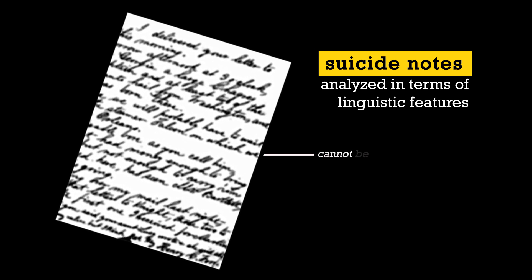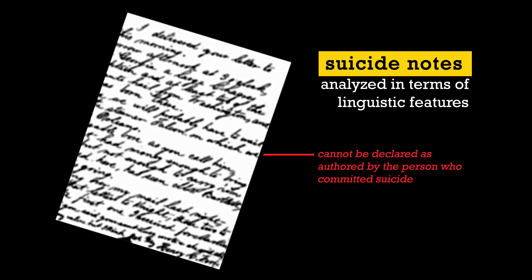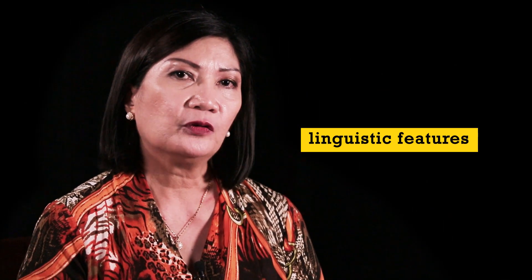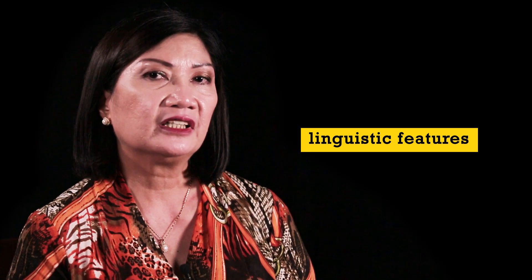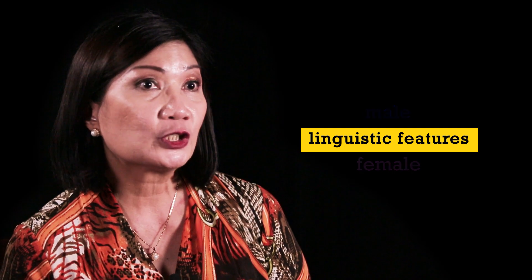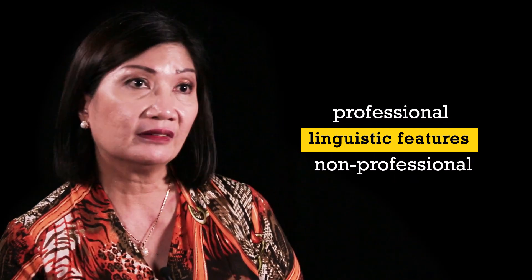You cannot declare, for example, that a note was authored by the person who committed suicide. You can only say such if there's already a thorough analysis of the linguistic features, and then the Forensic Linguist comes into the picture. There really are linguistic features that would signify or prove that a writing is produced by a male or a female, or by a professional or a non-professional.